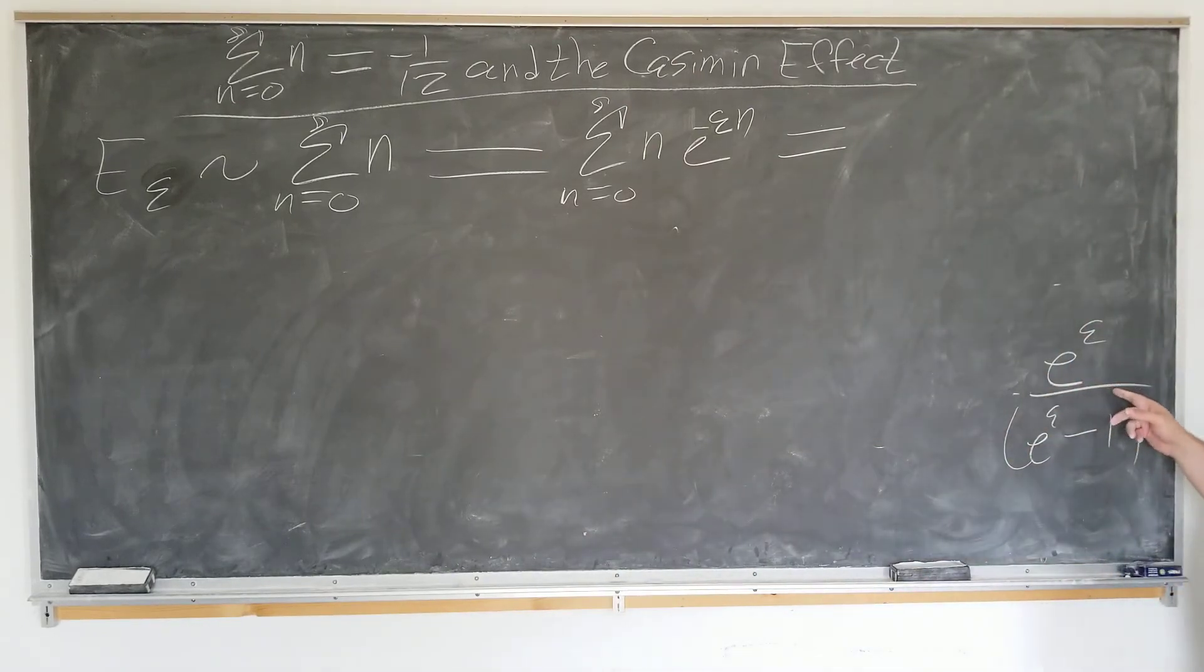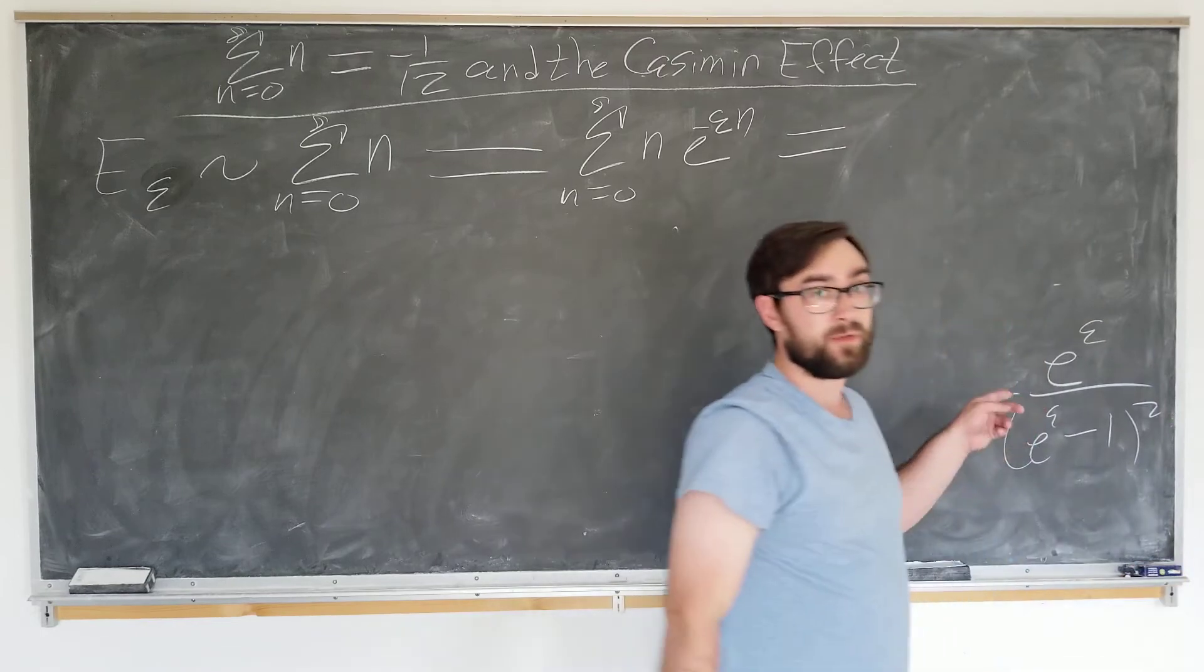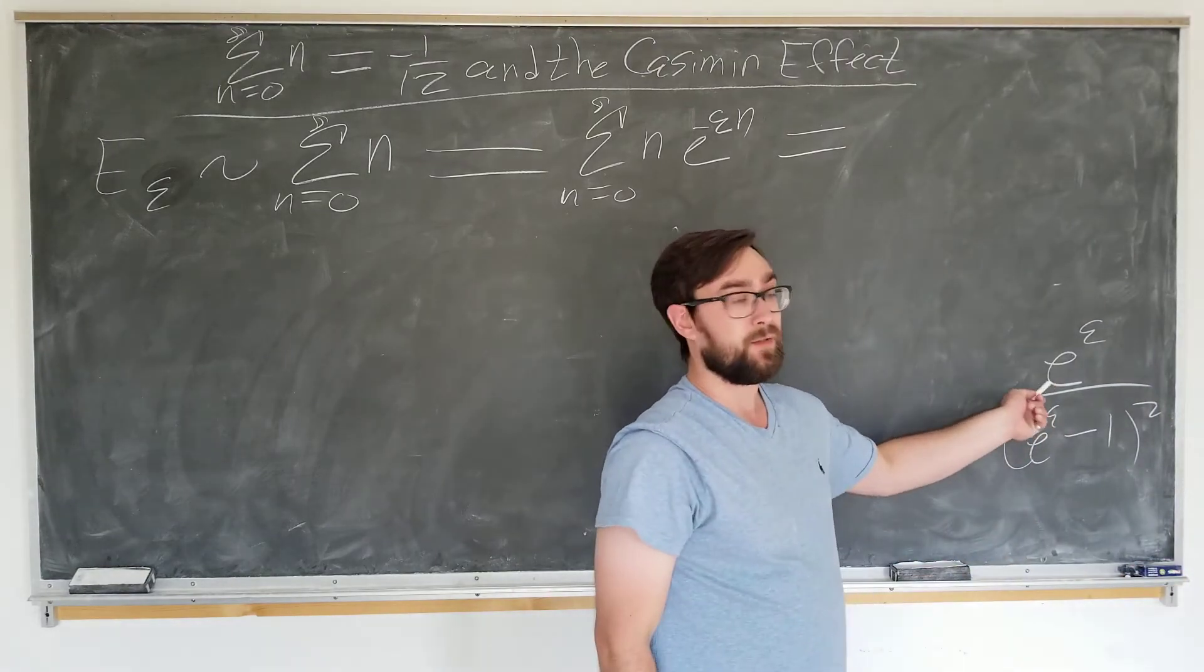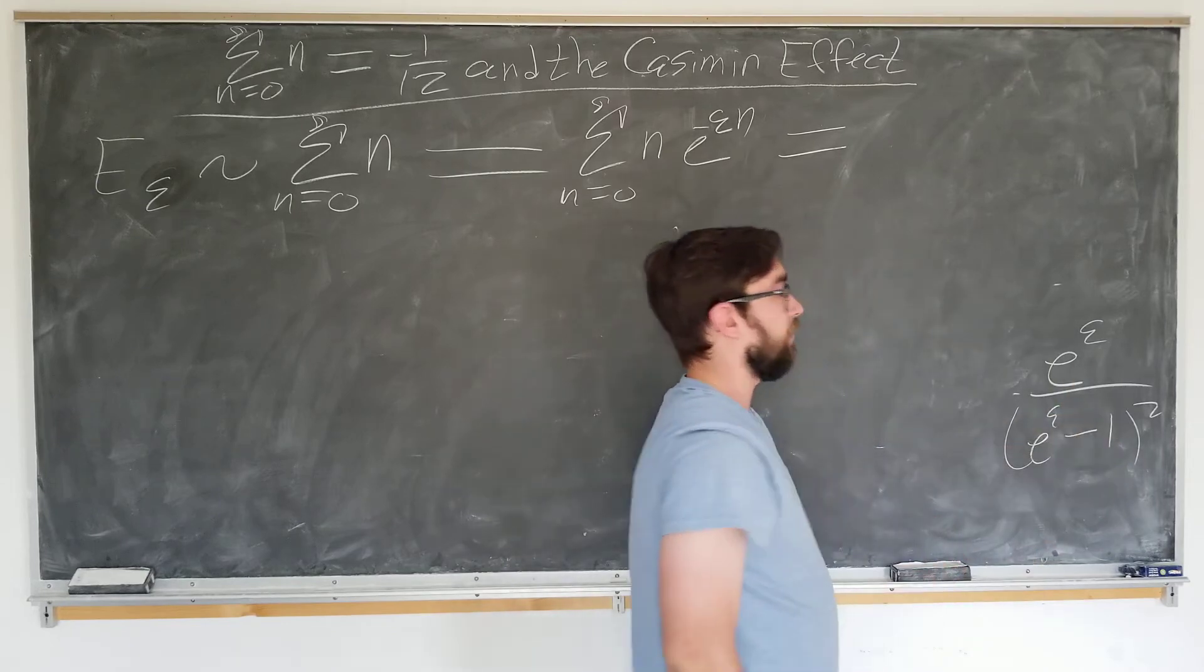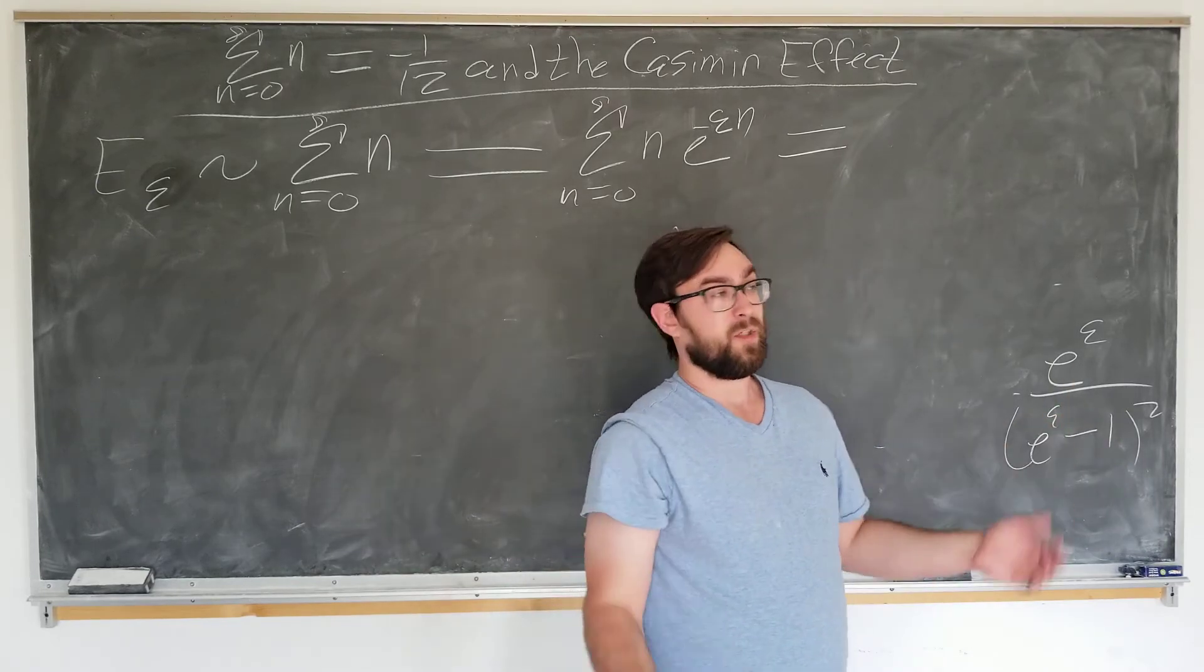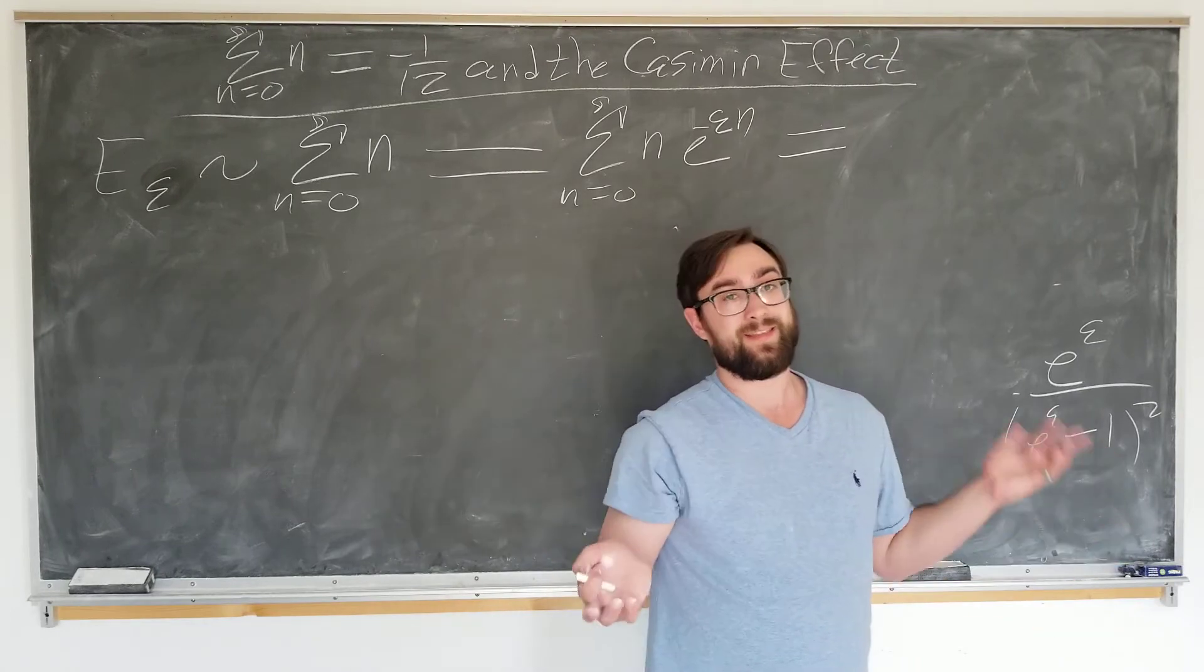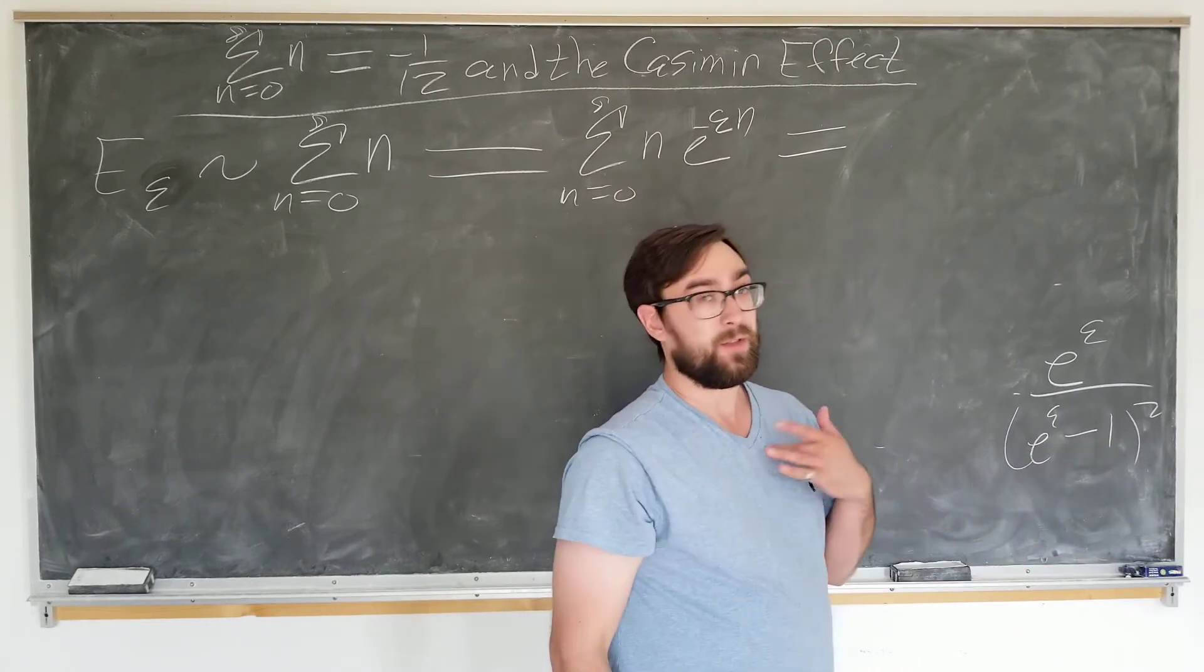So, we would start by writing the Taylor series for e up here. We would subtract one and square it down here. Work the sum to order of our choice. But then we have to polynomial long divide. Which, you know, it's not that bad. But I don't want to do it.